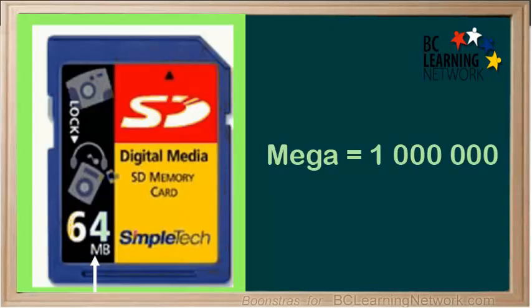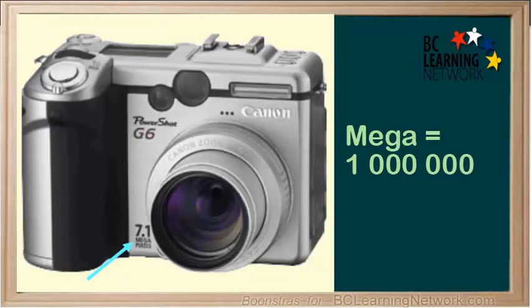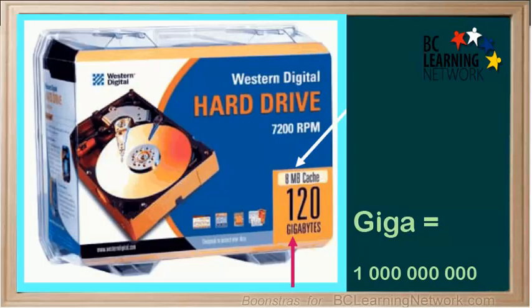For example, a memory card may have 64 megabytes. Mega means one million. The resolution of a camera may be measured in megapixels — the same prefix, mega, meaning a million. Here we have the unit gigabytes. The prefix giga means ten to the ninth, or one billion.